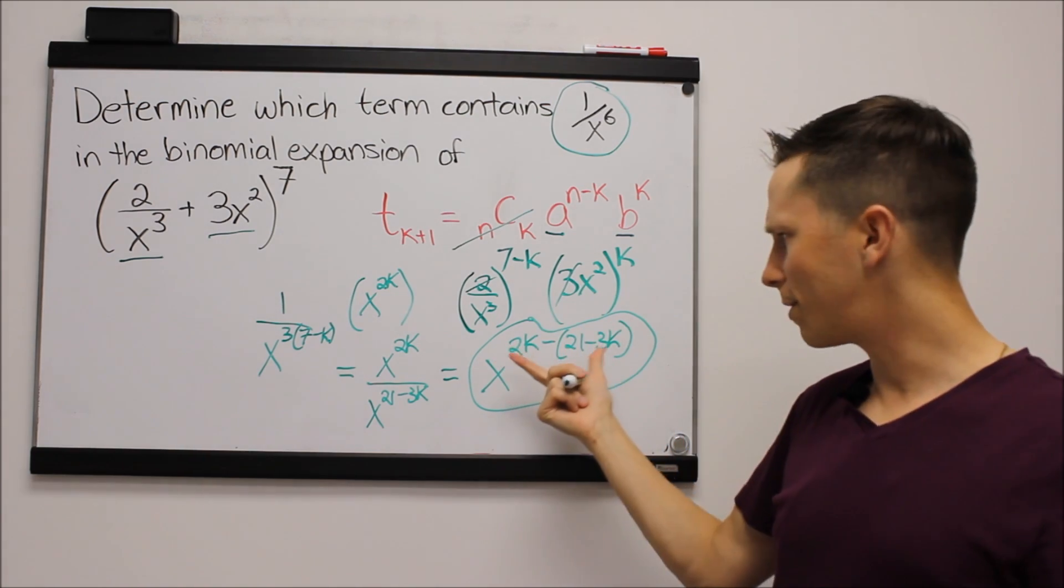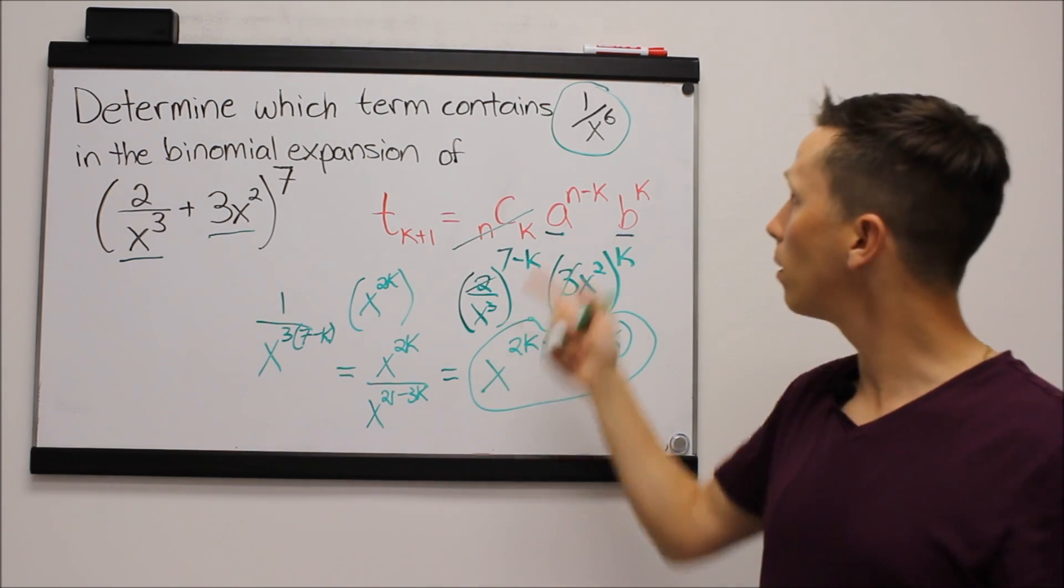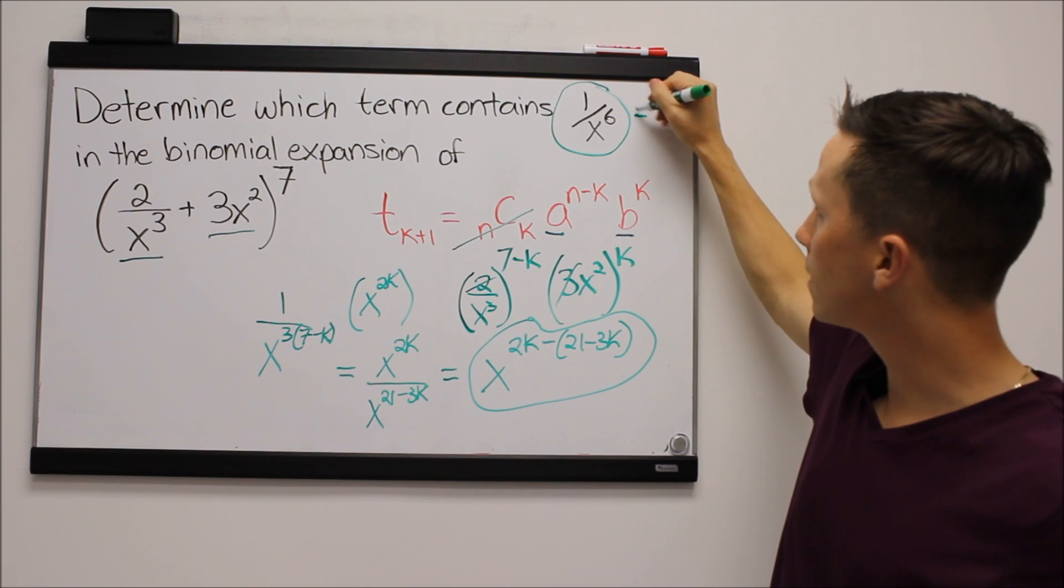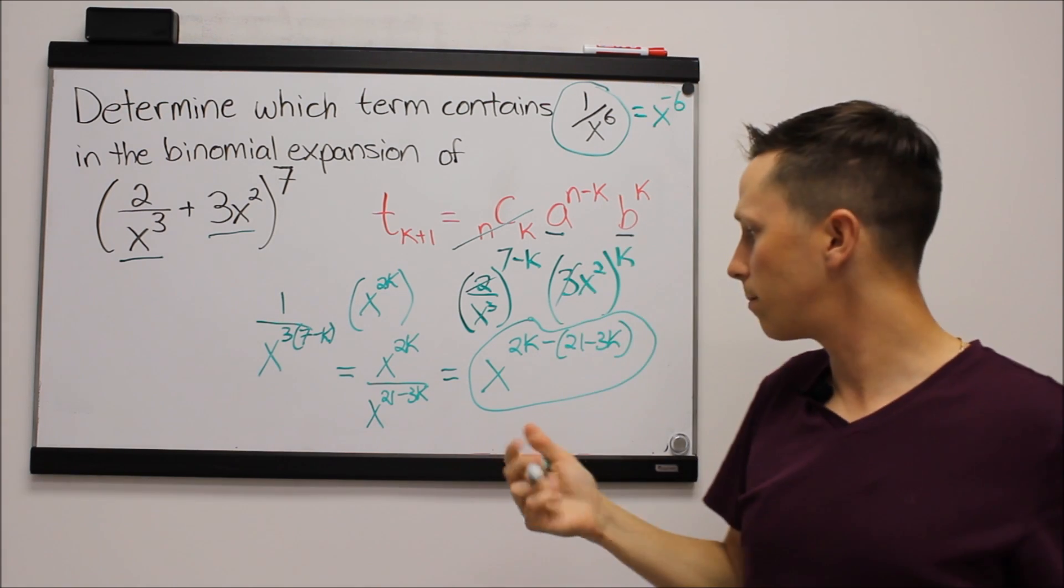So now the question is, what do we want this mess with k to actually equal? Well, 1 over x to the 6, that's the same as x to the negative 6. The exact same thing.